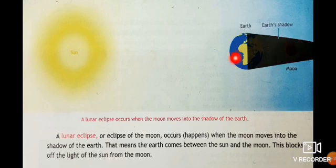The lunar eclipse, or eclipse of the moon, occurs when the moon moves into the shadow of the earth. That means the earth comes between the sun and the moon.